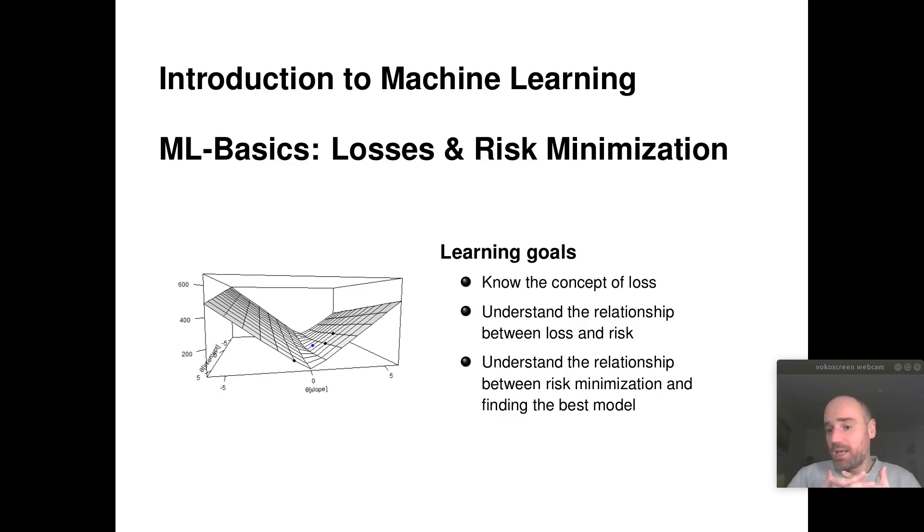Which means we can now measure the quality of functions for training data and if we can measure stuff we can optimize stuff. That will now give rise to this principle of empirical risk minimization and at the end we'll hopefully understand that in a certain sense machine learning is not much more than numerical parameter optimization.